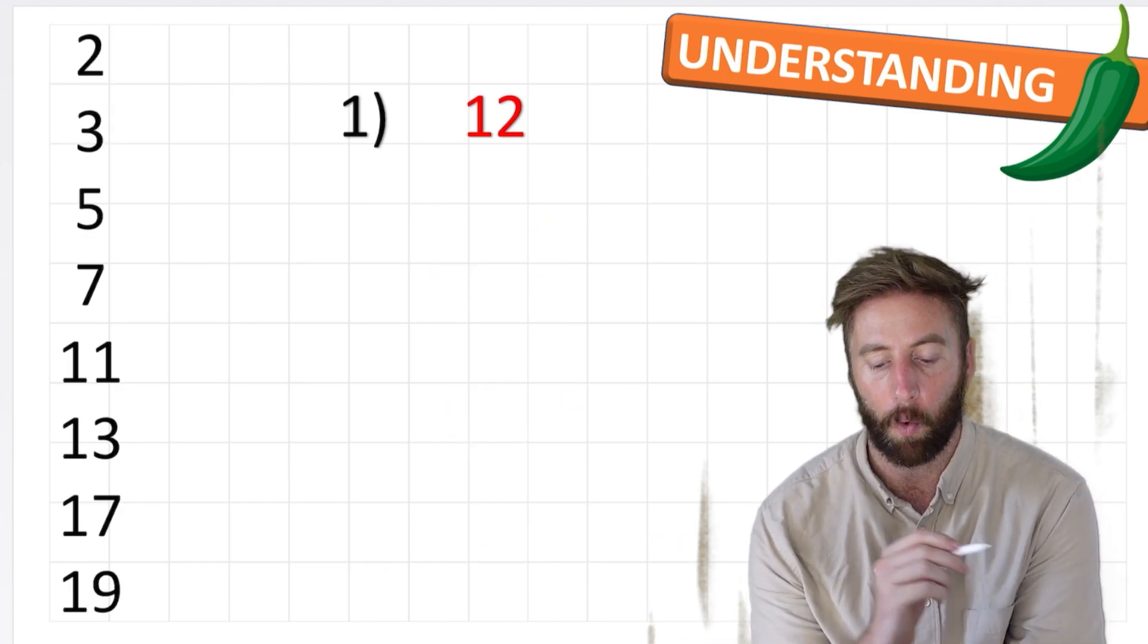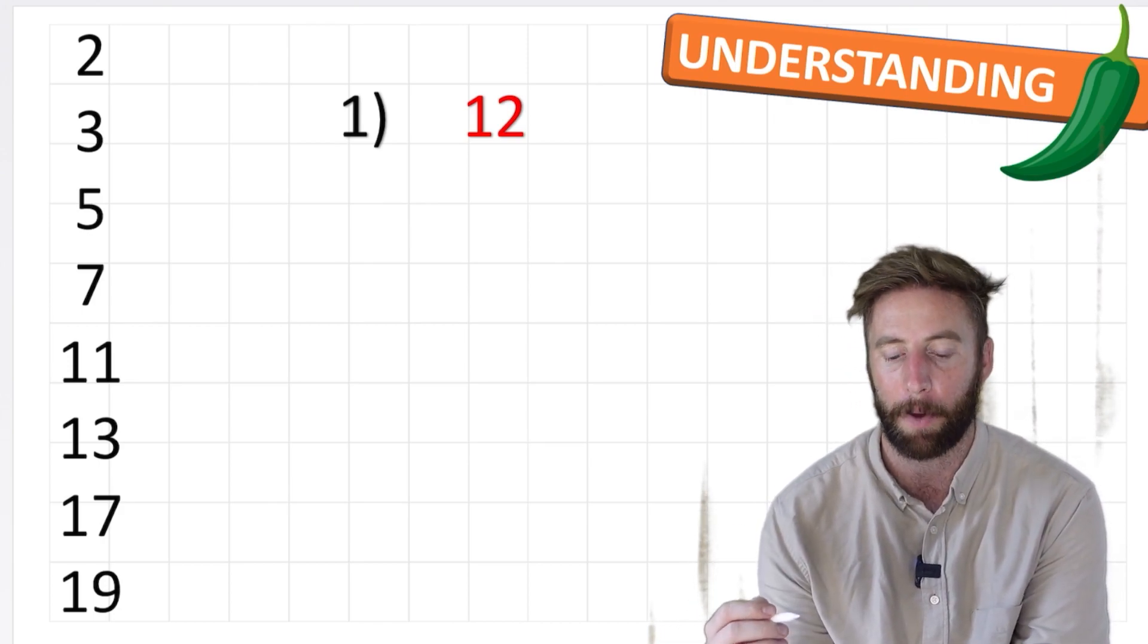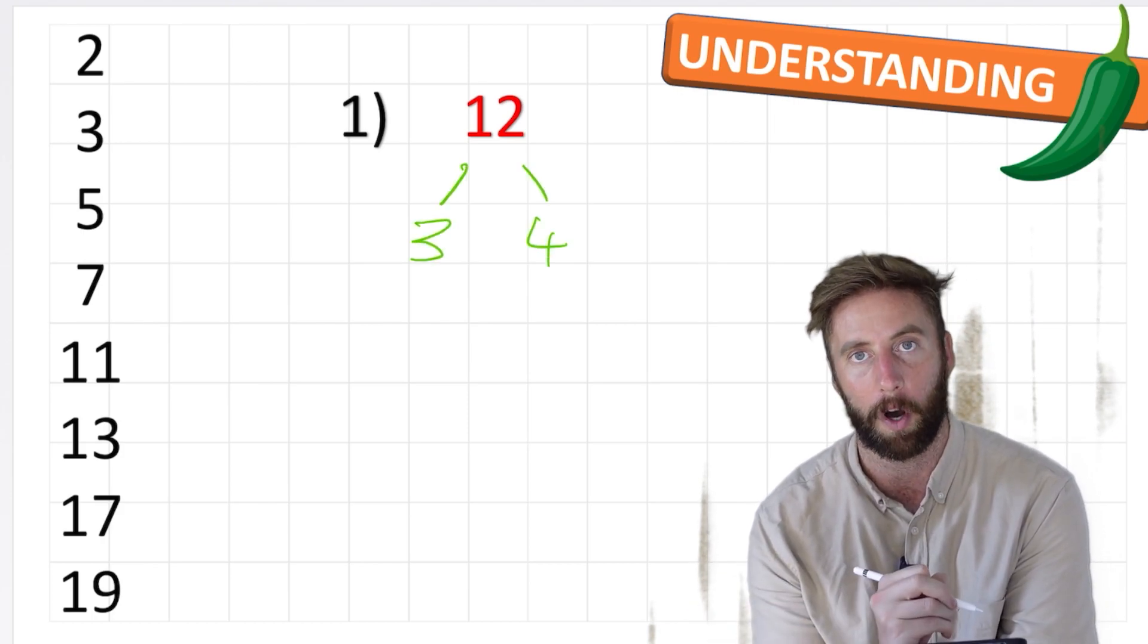But wait a minute, I can hear some of you asking what if we didn't start with 2 times 6? What if we started with another factor pair of 12? What if we started with, let's say, 3 and 4? Because 3 and 4 equal 12.